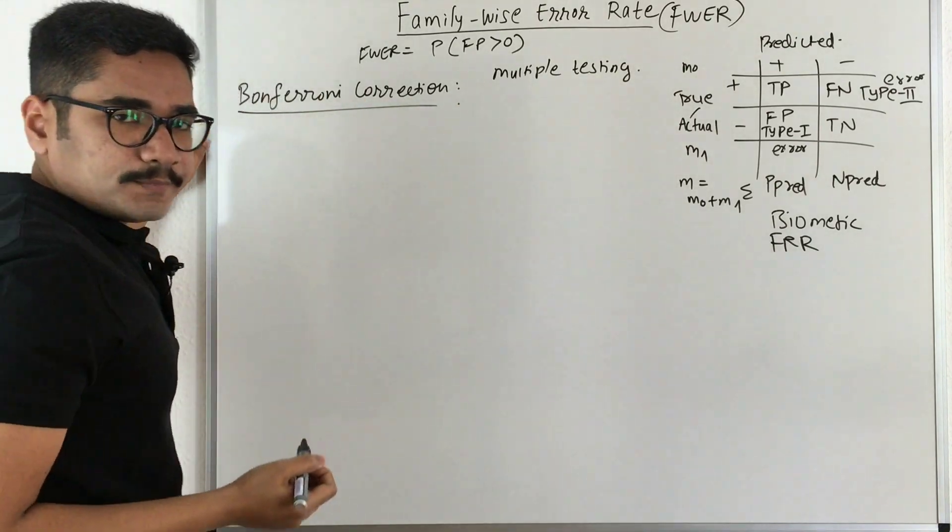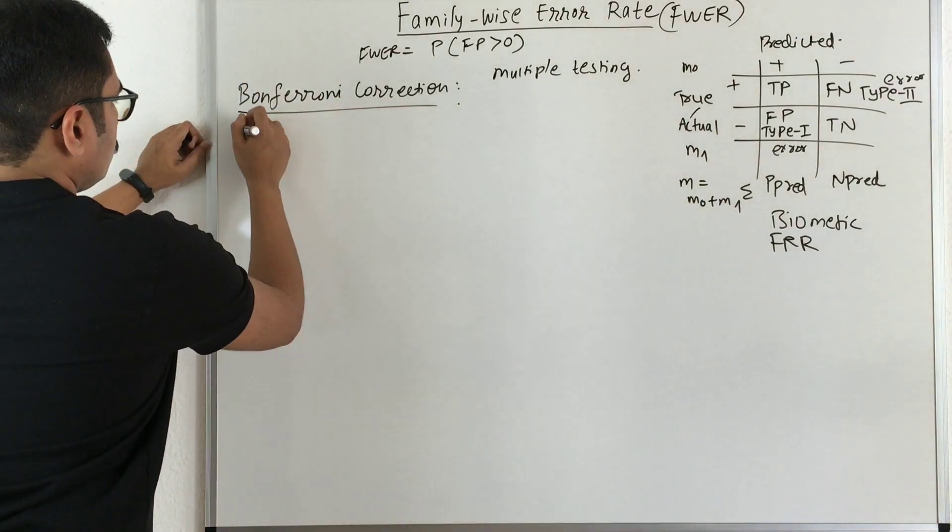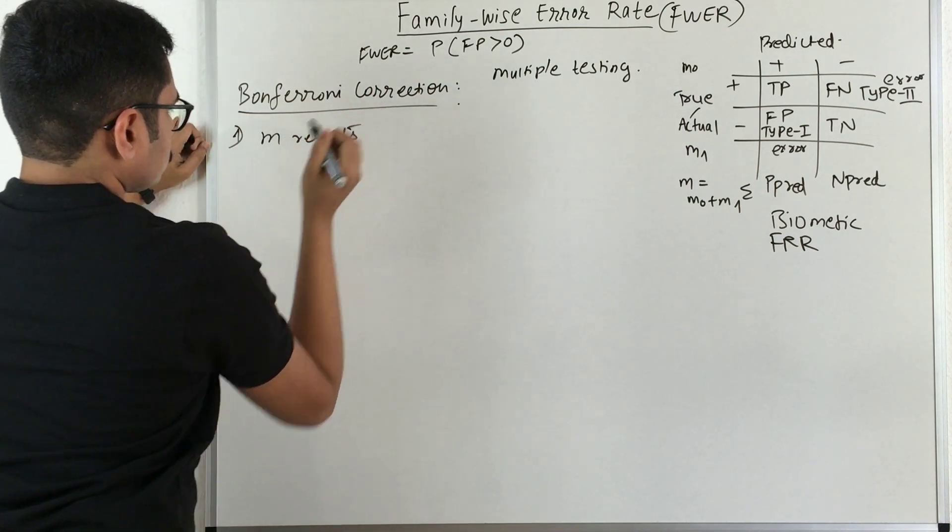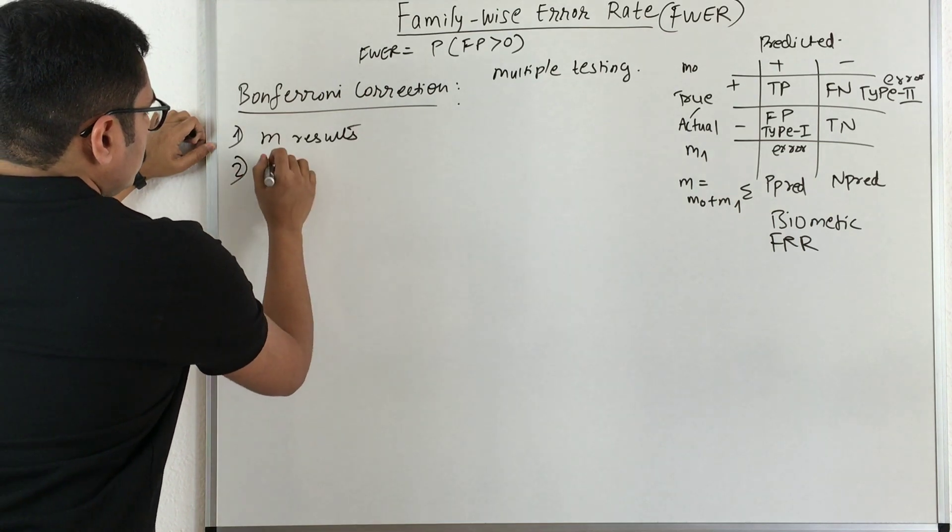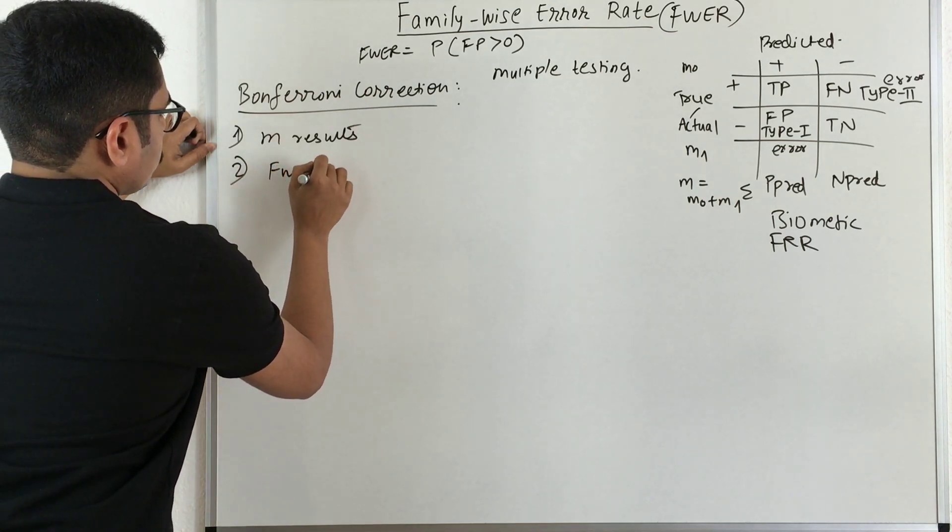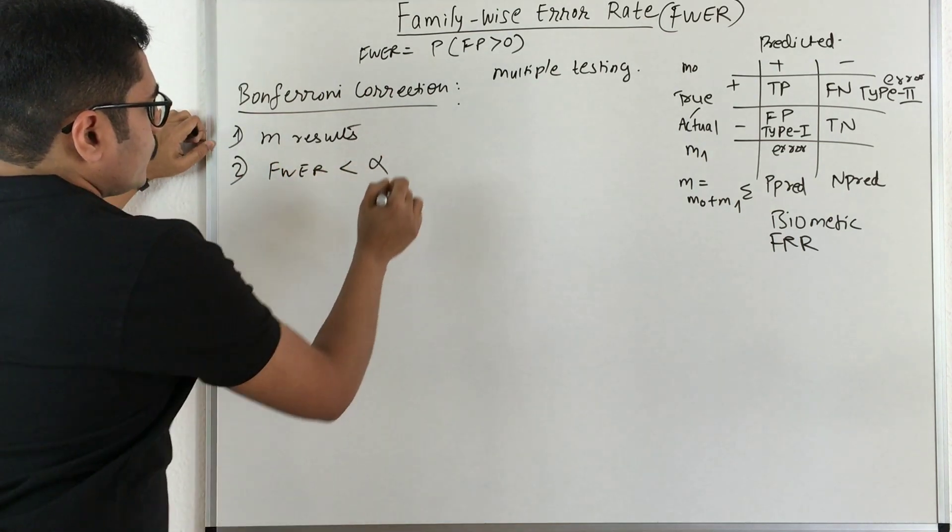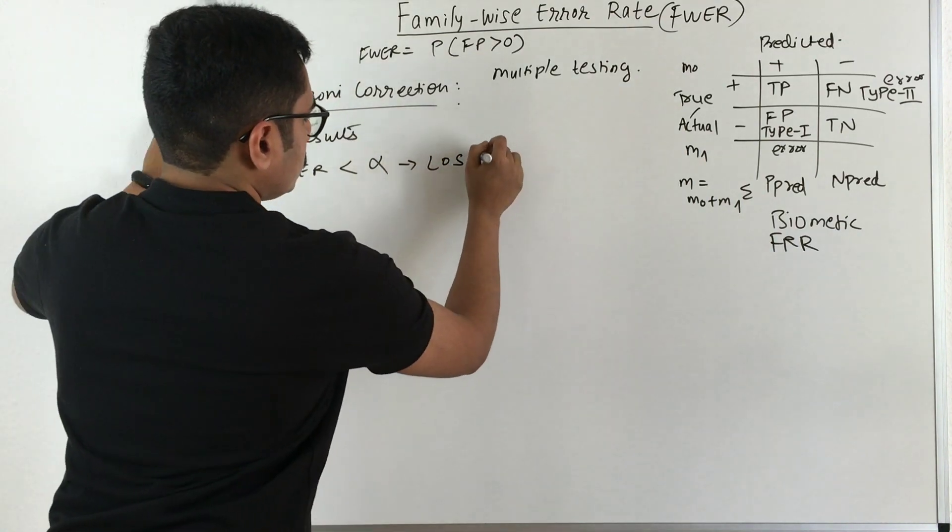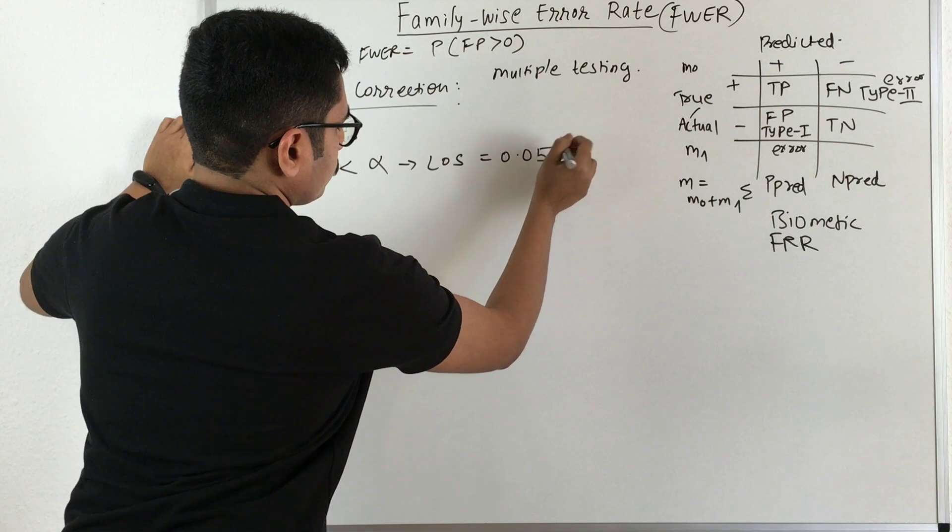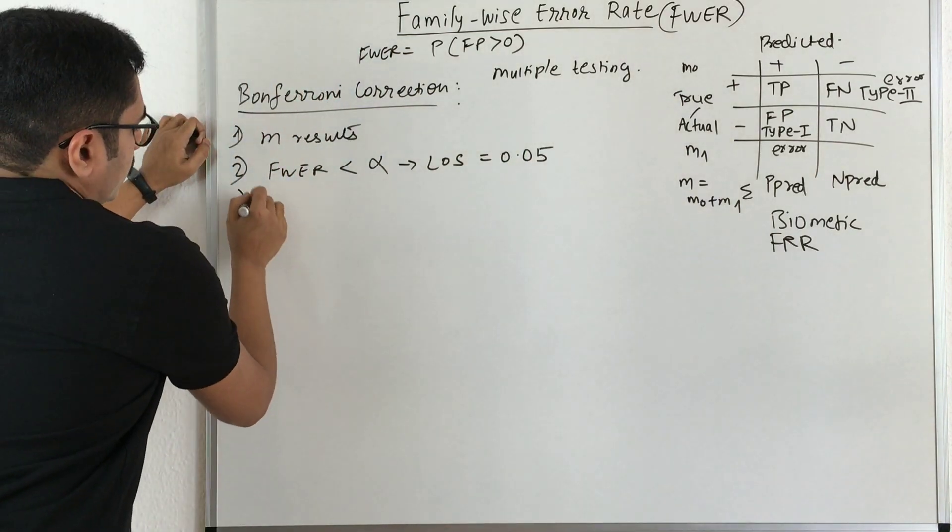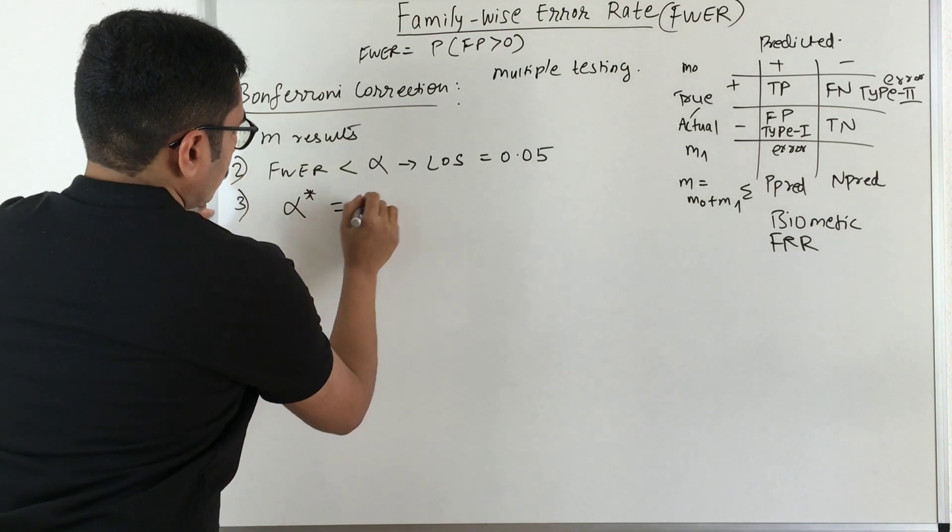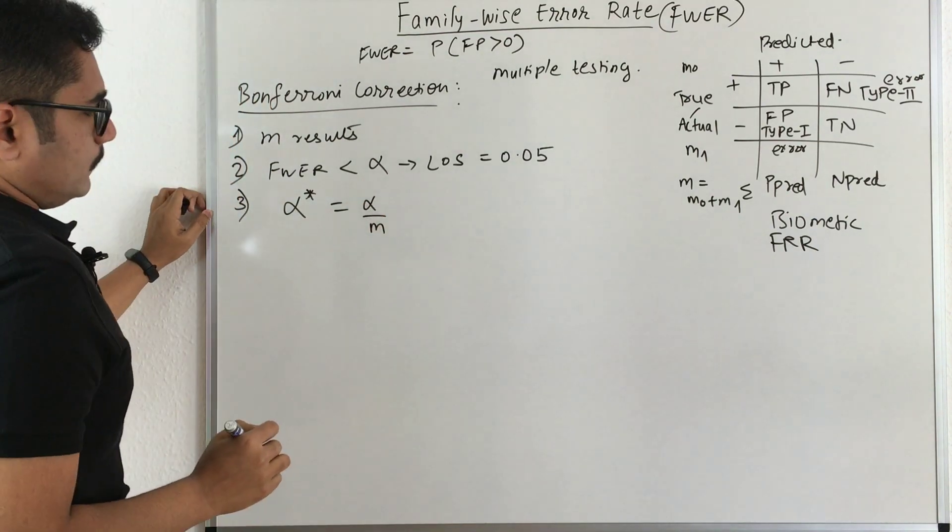So what are the steps in Bonferroni correction? So you take this M results, and you want the family-wise error rate less than alpha. Now alpha here is called the level of significance. So the standard value is 0.05, and finally you correct this alpha, that is level of significance, as alpha divided by M, that is the total number of samples.